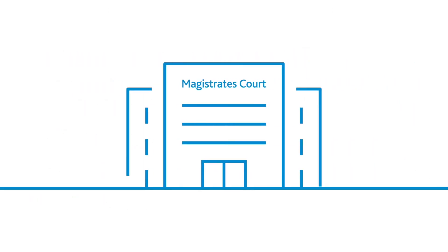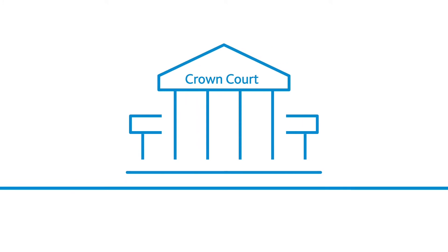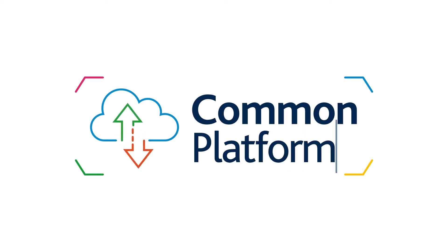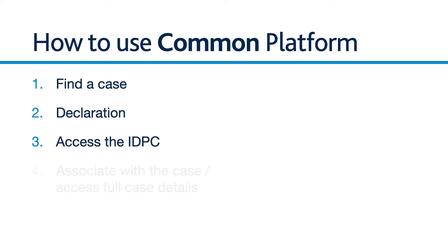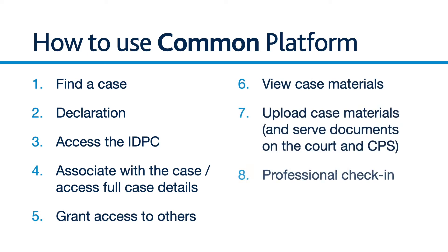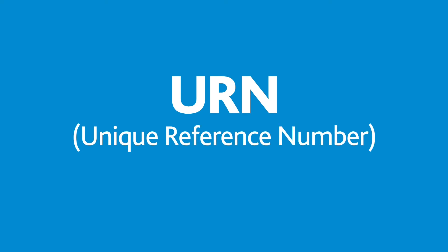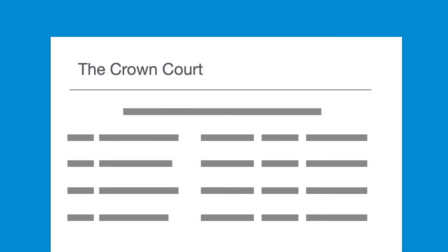In the Magistrates Court on Common Platform cases, this is the system you will use to view case materials. In the Crown Court, for the time being you will carry on using the Digital Case System or DCS to access case materials for both Exhibit and Common Platform cases. Common Platform cases are identified by the Unique Reference Number or URN, which you may be familiar with from police documents. You will see these URNs appear in the published court lists of both the Magistrates Court and the Crown Court.